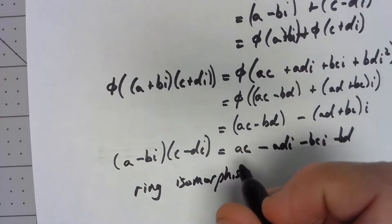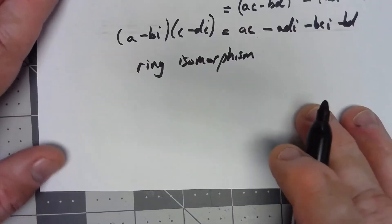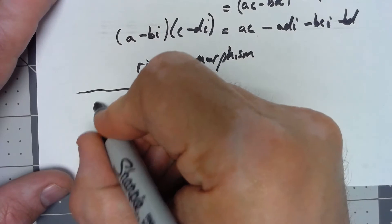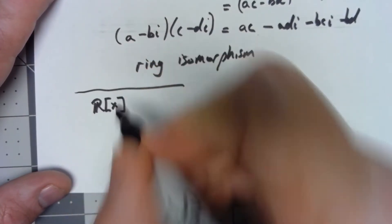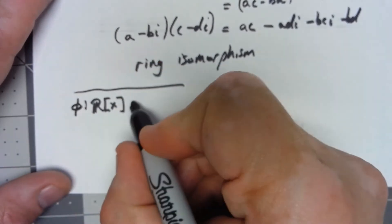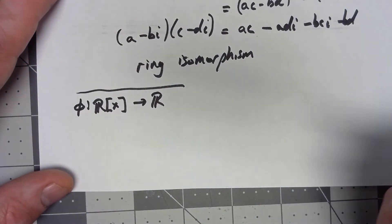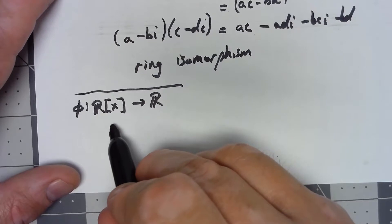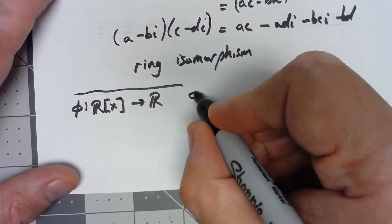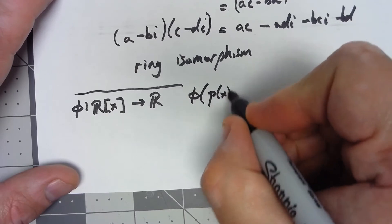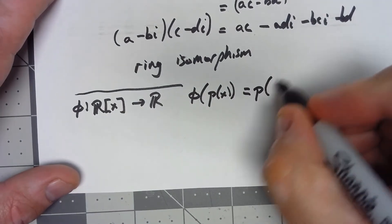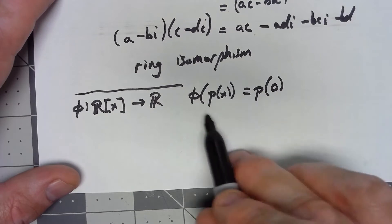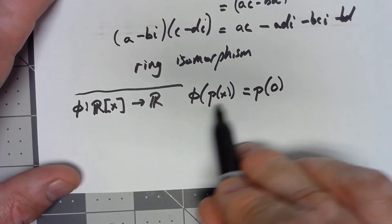I want to take a look at one more example here. Let's say we have the ring of polynomials with real coefficients, R[x], and I'm going to define a mapping from that into the real numbers. The way I'm going to do this, so remember that the elements of this are polynomials, so I'm going to say that φ of some polynomial p(x) is equal to p(0). So what that's really going to do is just give us the constant coefficient, the constant term in our polynomial.